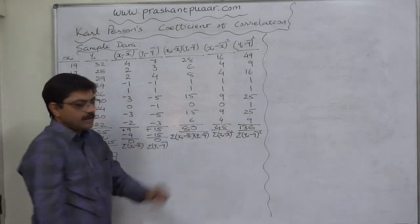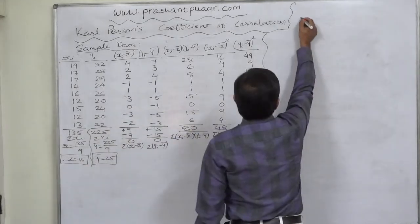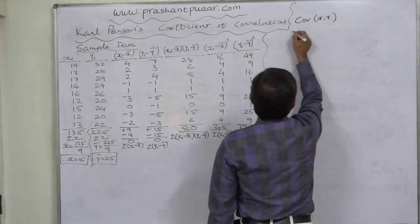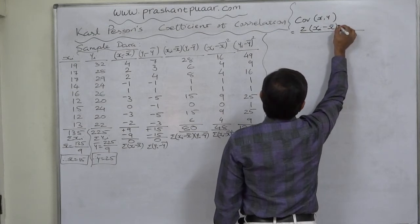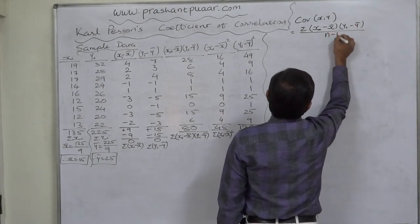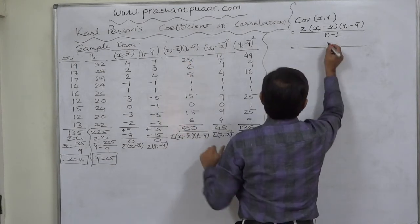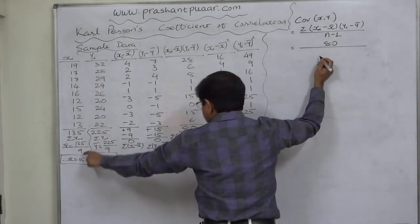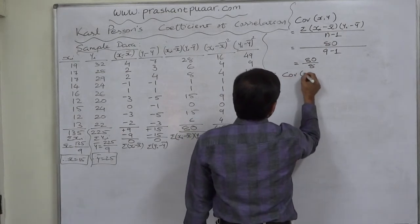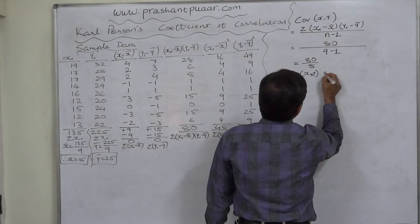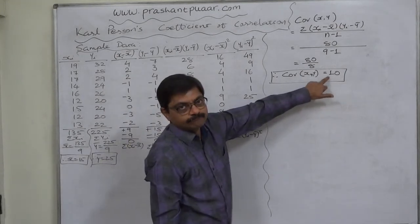Let us calculate the covariance. Covariance equals sigma of (X−X̄)(Y−Ȳ) divided by n−1, because this is sample data. The value of sigma (X−X̄)(Y−Ȳ) is 80, n is 9, so 80 divided by 8 gives a covariance of 10. This means there is a positive relationship between X and Y.